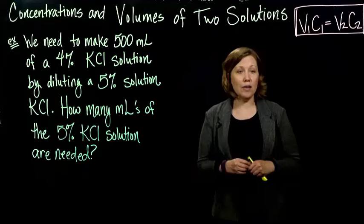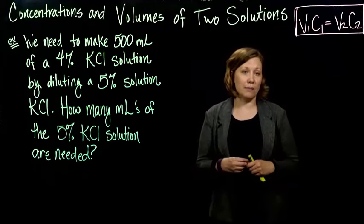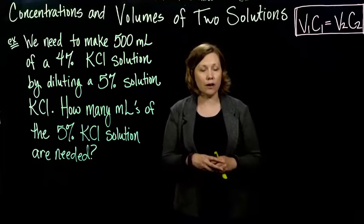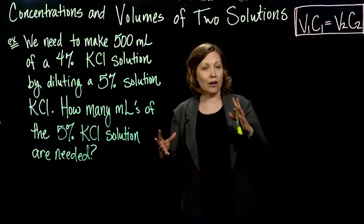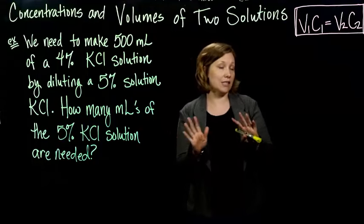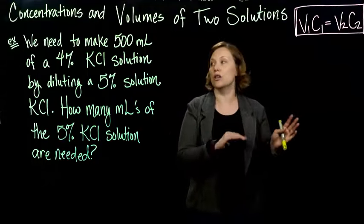And we want to figure out how many milliliters of the 5% potassium chloride solution are needed. So we have to figure out which is our first concentration and volume and which is our second, after we've diluted it, concentration and volume.